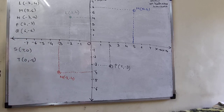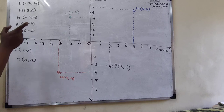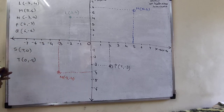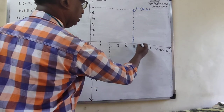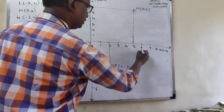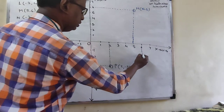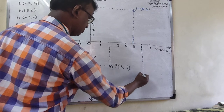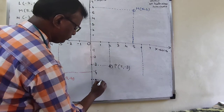Q(6, -5) — plus-minus, so it is the fourth quadrant. The x-coordinate is 6 and the y-coordinate is -5. Plot point Q at (6, -5).